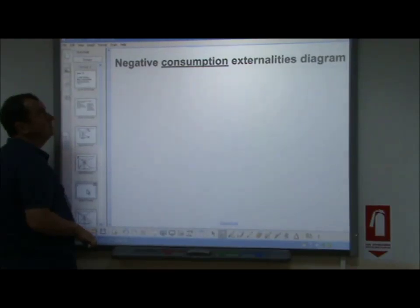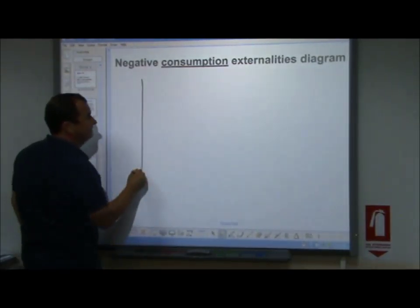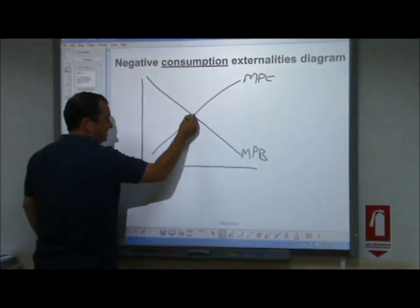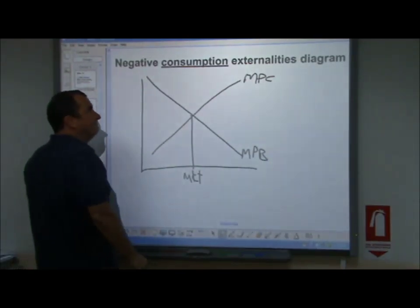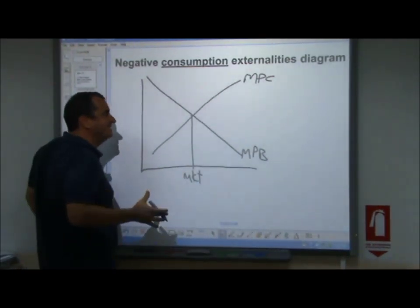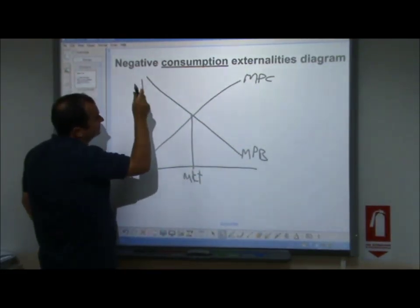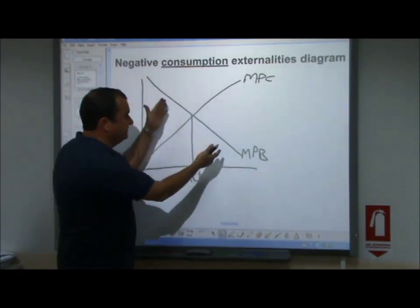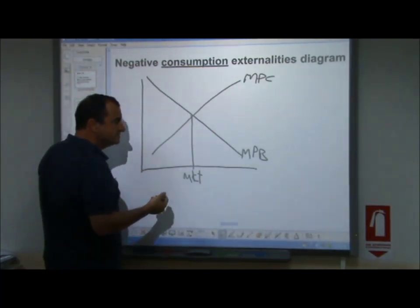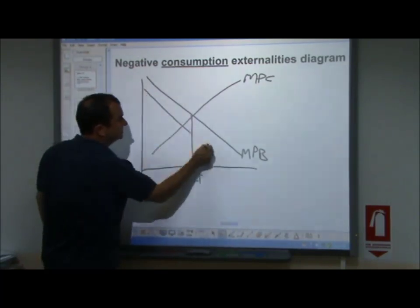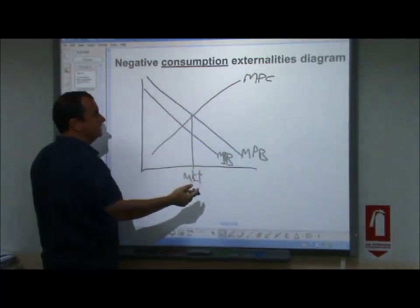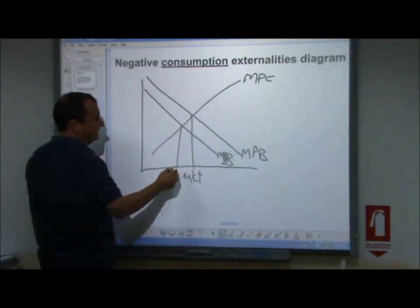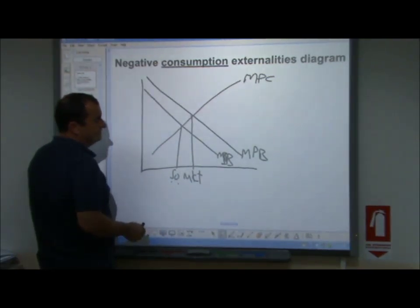If I now draw negative consumption externalities as a diagram, you'll see a difference. We start in the usual way: marginal private benefits, marginal private costs — that's the market generated level of output. But now, if I want to show that the social benefits are less than the private benefits, when the negative externality occurs during consumption, there's less benefit for society. Because of the damage done during the consumption of these goods, the rest of society gets a kind of negative benefit. So I plot the marginal social benefits below the private benefits, reflecting the negative benefit for third parties — showing that the socially optimal level is below the market, and there's a welfare loss.